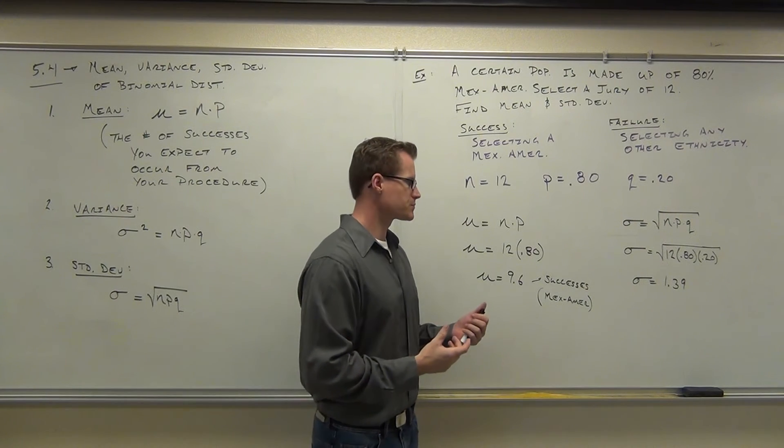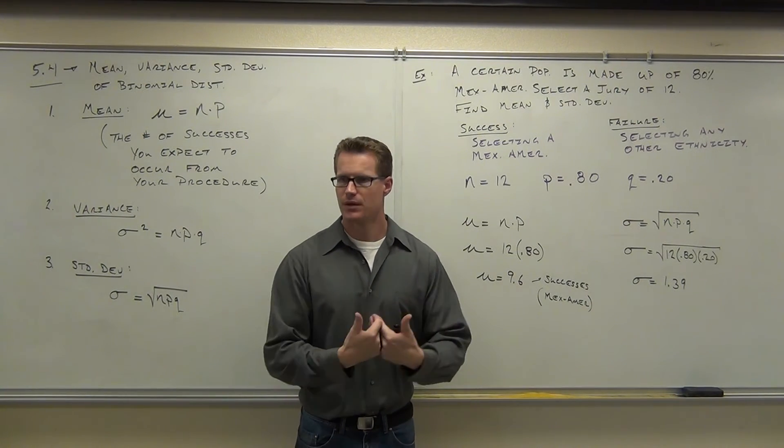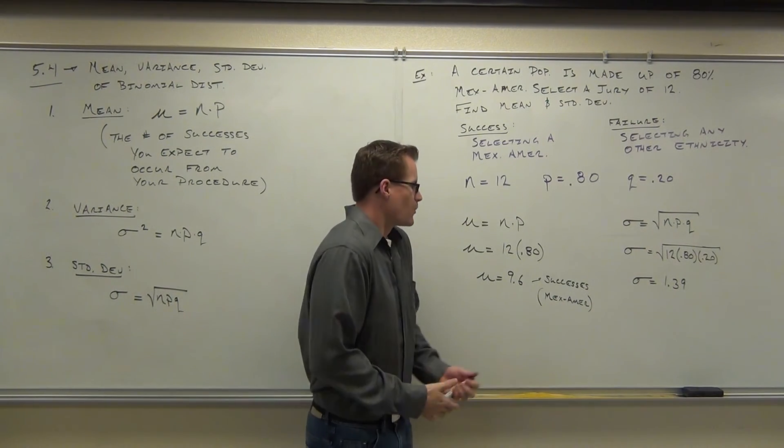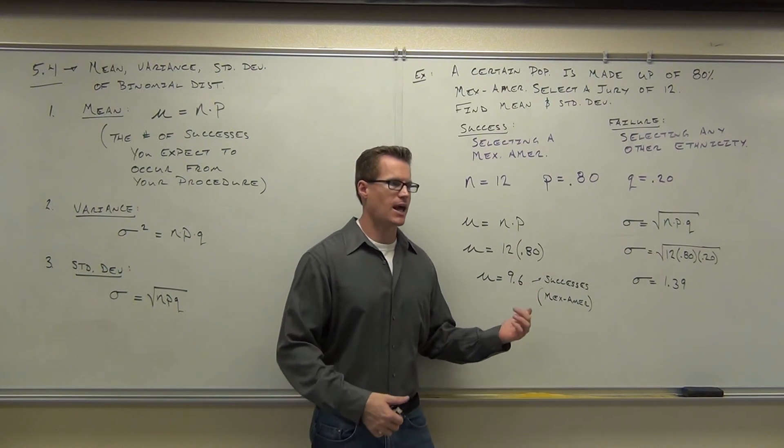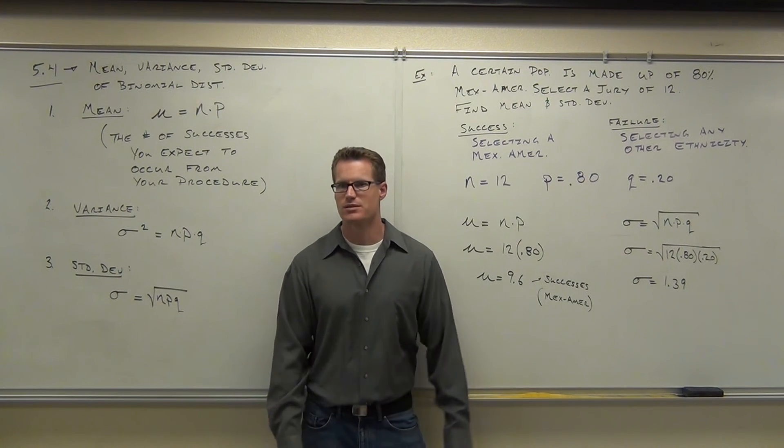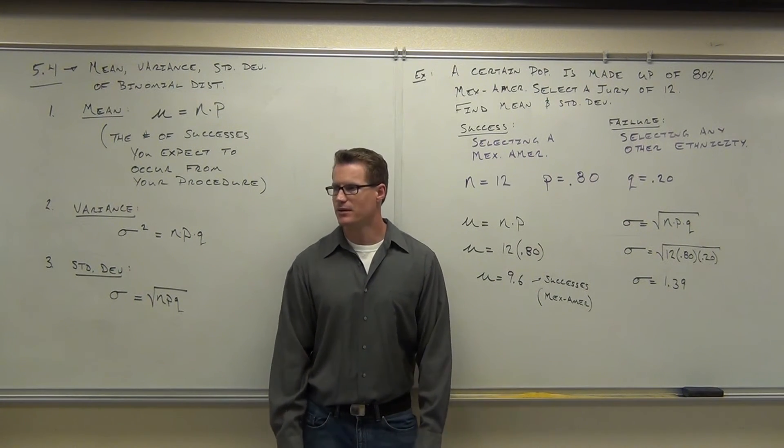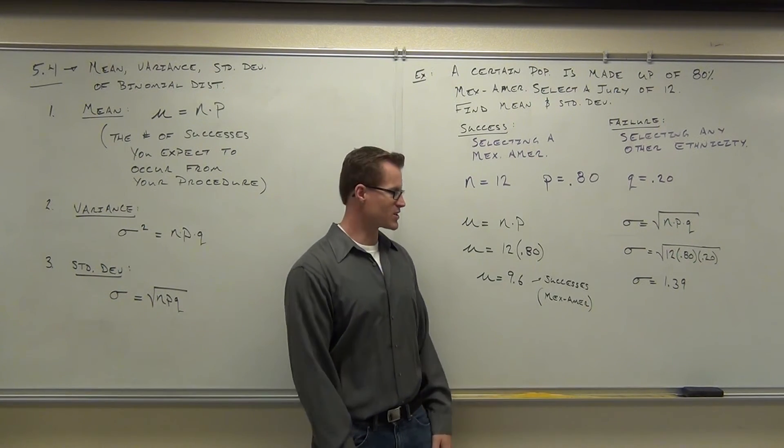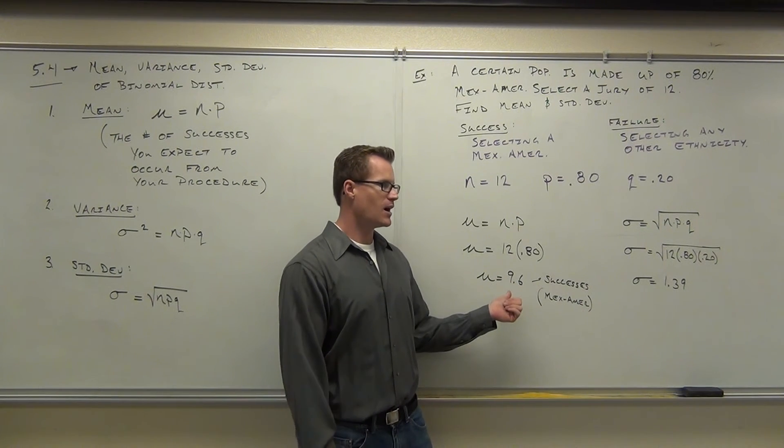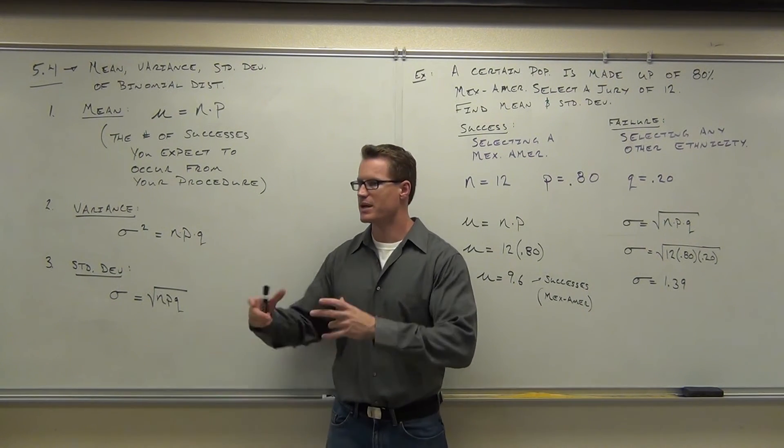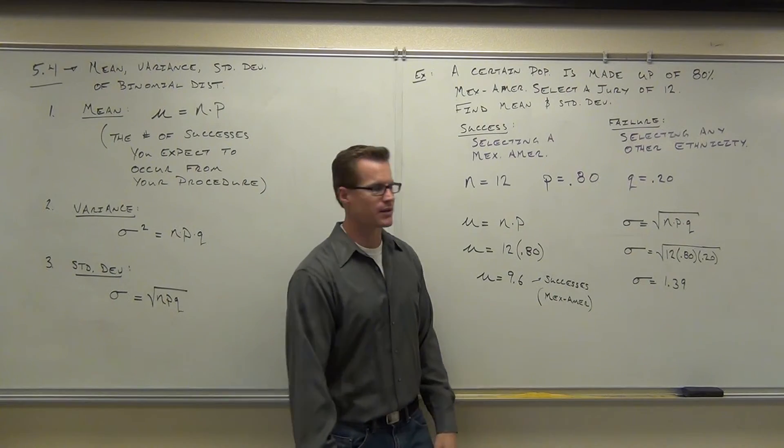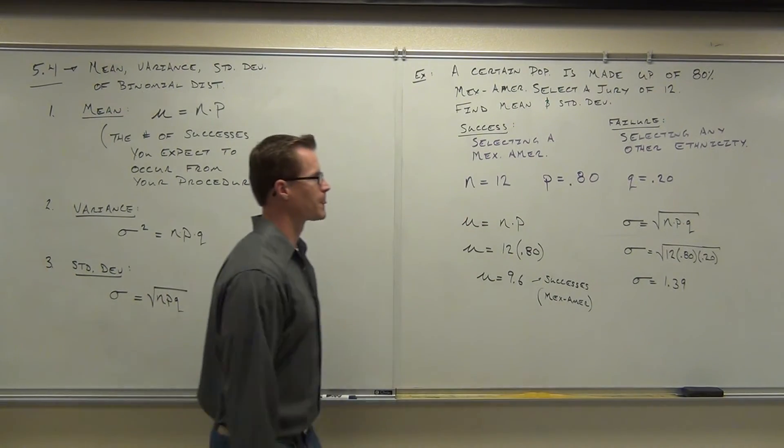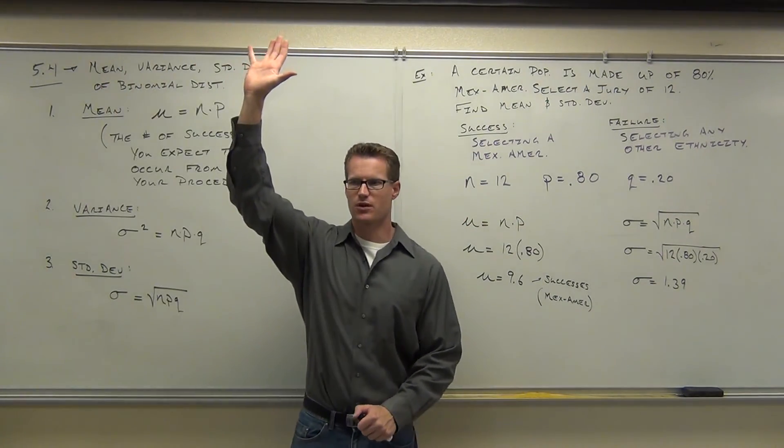1.39, that's the average distance from the mean that you should get out of this. So yeah, we're not dealing with whole numbers, even though we can't have 9.6 Mexican-Americans. Everyone counts as a whole person, so we can't have .6. But this is an average, so based on everything, if we were to average those together, and the same thing happens with our standard deviation.